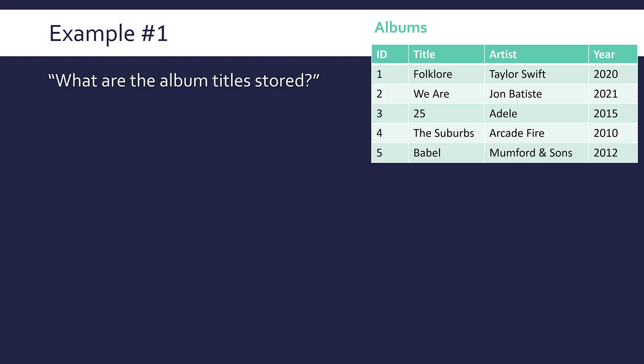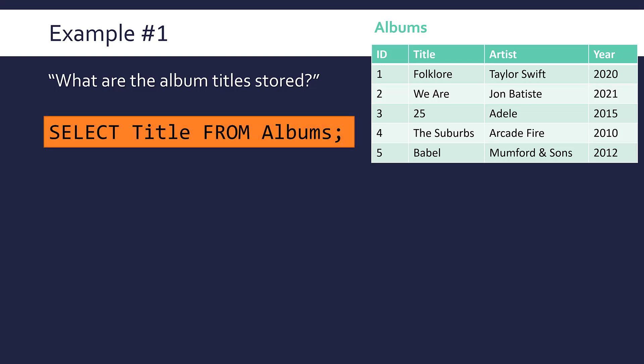Let's say my query, my question is: what are the album titles stored? I want all of the album titles held in this table. If you were using SQL, you'd write a statement like this: select title from albums. Select title is specifying what field I want. I want just the album titles, not ID, artist or year. From albums is needed to tell the database where to look, what table to look in. The table is called albums and the semicolon you may or may not need.